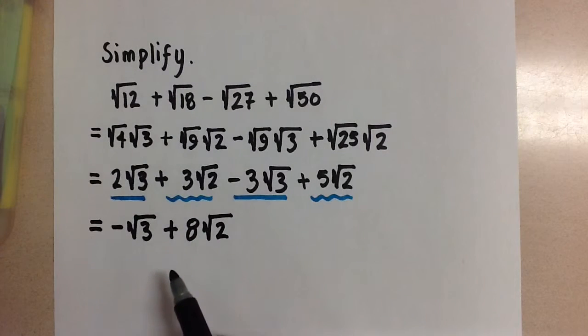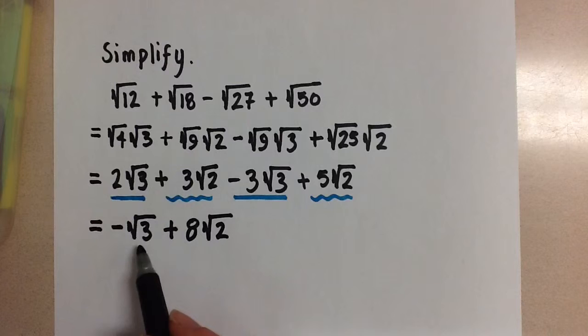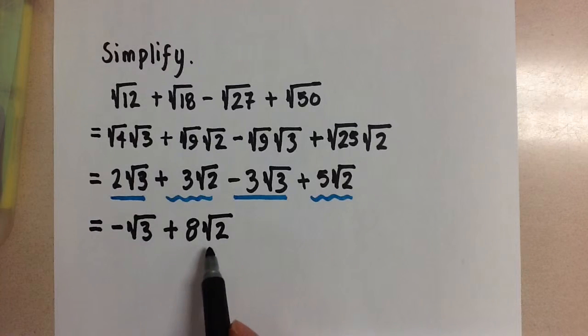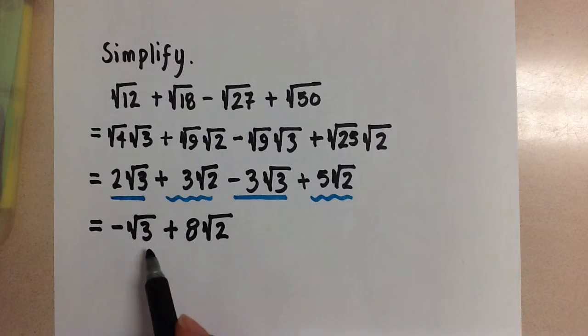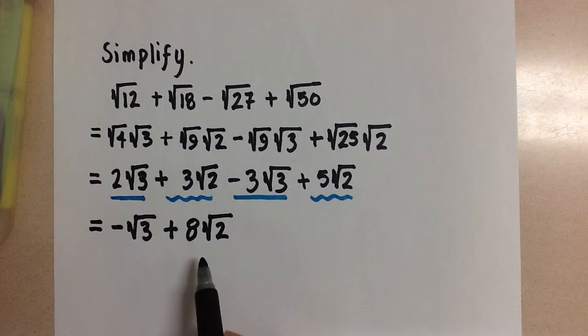Now we have two radicals that are both in simplest form and they are not like radicals, so we have simplified this as much as we can and this is our final answer.